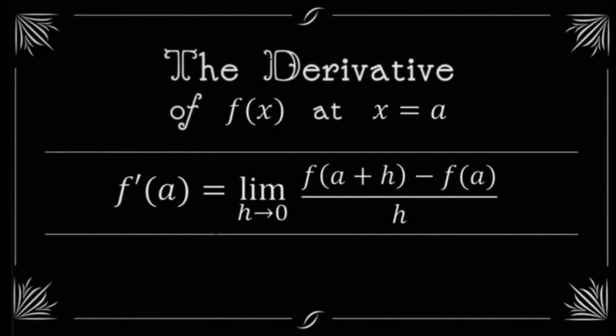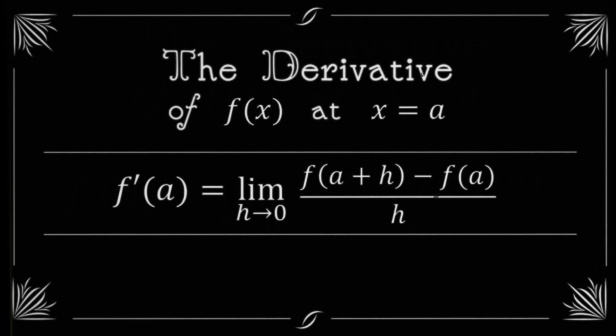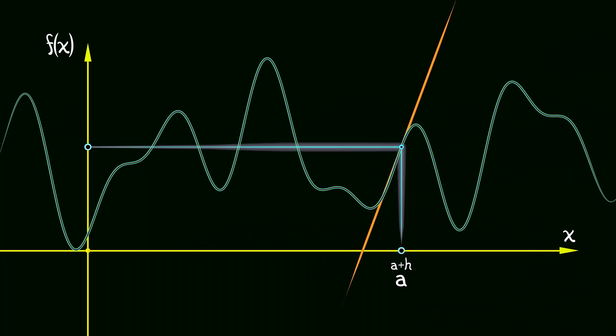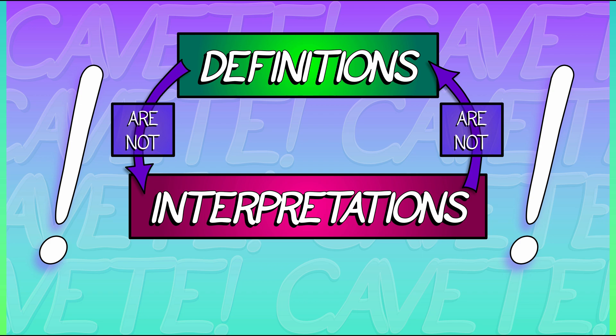The definition of the derivative is in terms of a limit. The slope is merely an interpretation of the derivative and not a definition itself. Now, each has its own uses. You need to know the definition. You need to know the interpretation as slope.